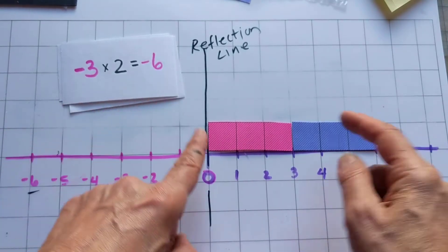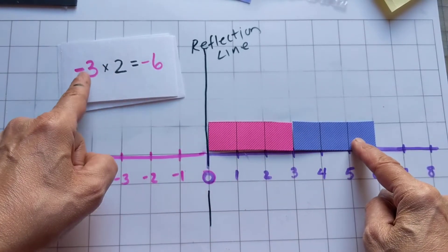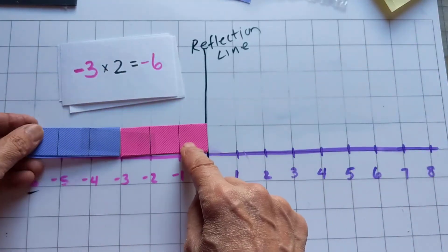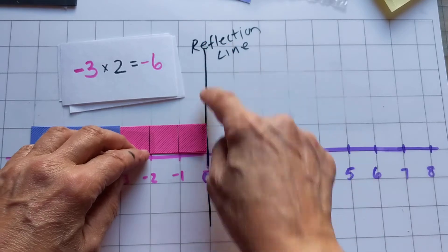So you still look at three times two is six, but when you see the negative you want to reflect across that origin line.